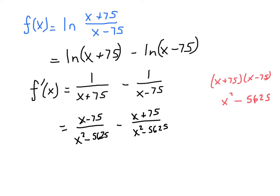And I can now add these two fractions together. Be careful. This minus sign has to distribute to both terms in that numerator. So this is going to be x minus x, which is 0, and negative 75 minus 75, which is negative 150. So that's our derivative written as a rational function.